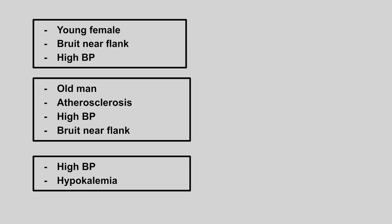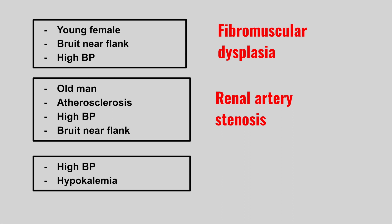The next one is a young female with a bruit heard near the flanks and very high blood pressure. This is fibromuscular dysplasia. The reason for the high blood pressure is elevated renin.